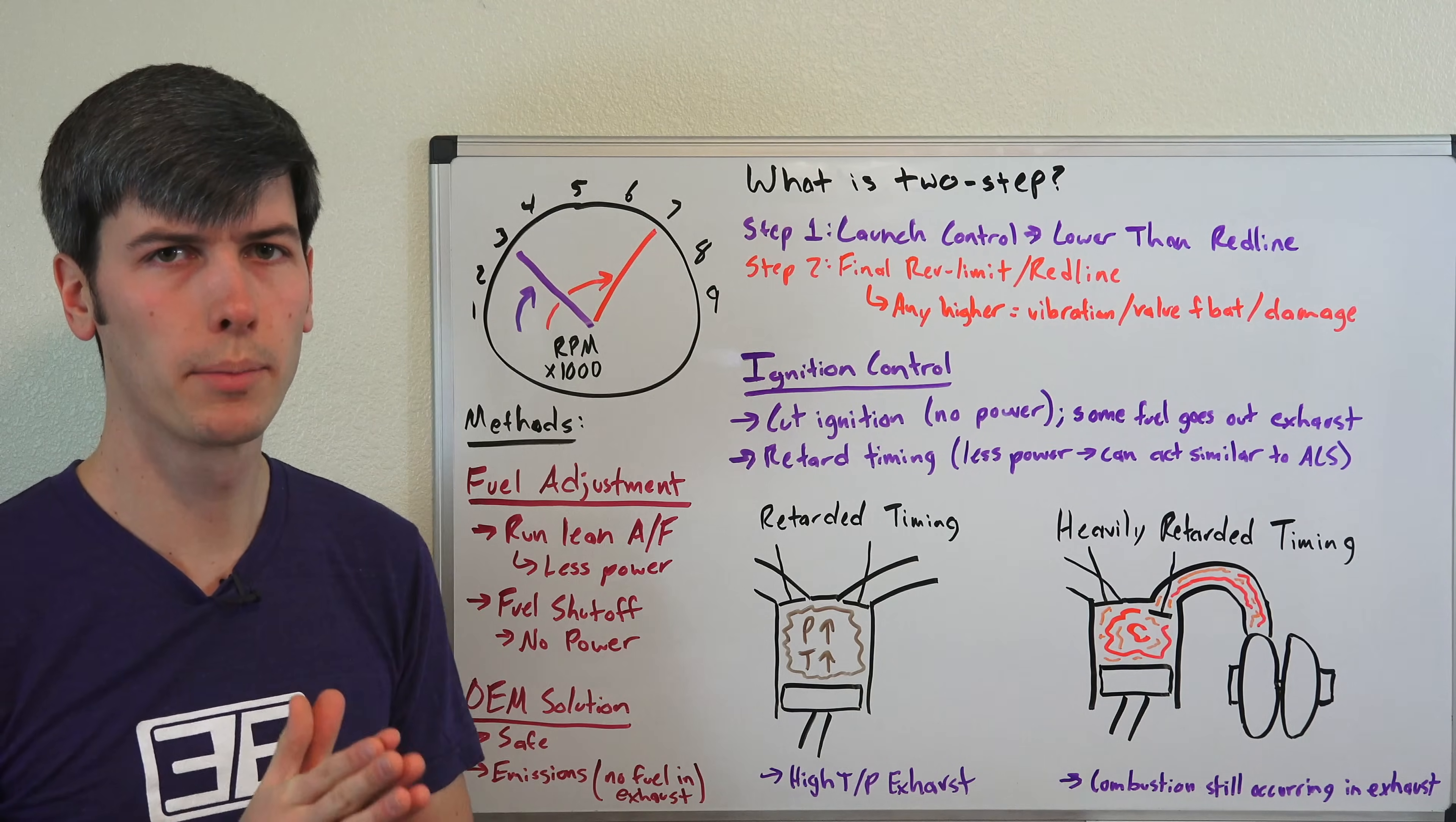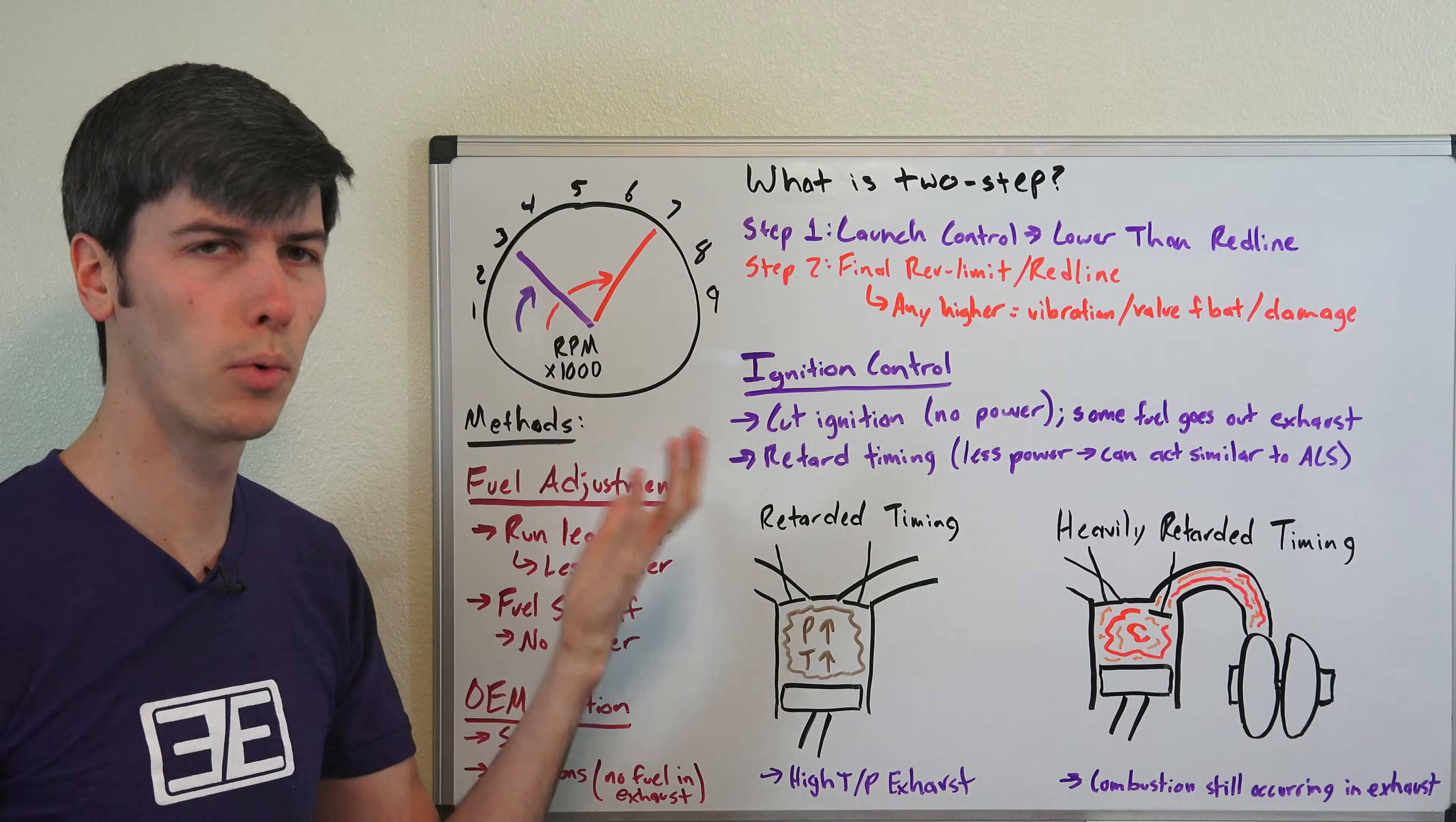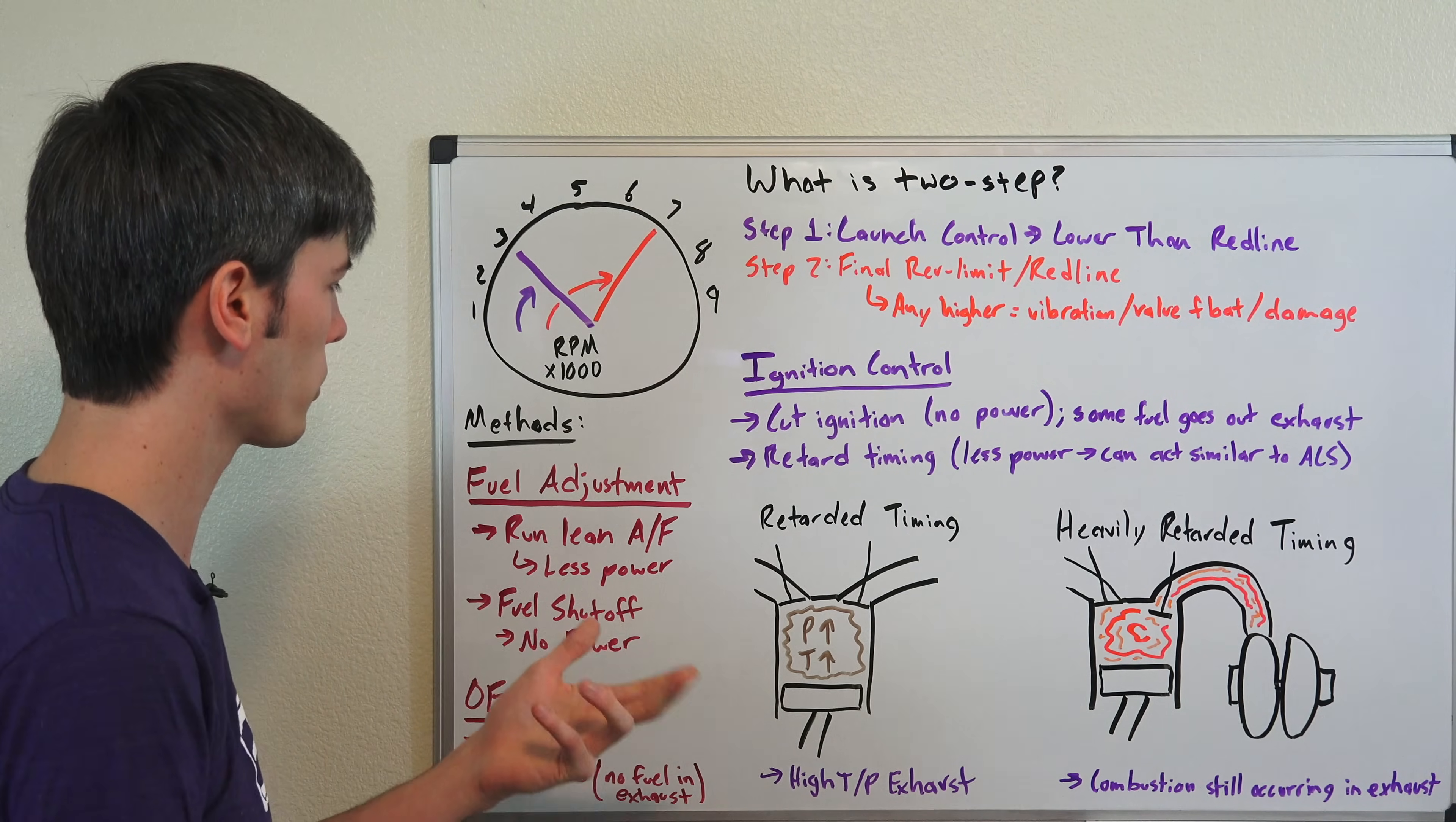So how do these rev limiters work? Well, there's really two major methods that you can use in order to create a rev limiter. You can adjust the fuel or you can adjust the ignition. And so speaking of adjusting the fuel, this is more commonly used in OEM solutions, so cars that you buy from the dealer or wherever.